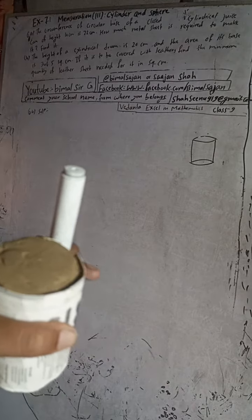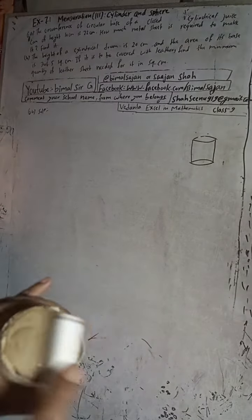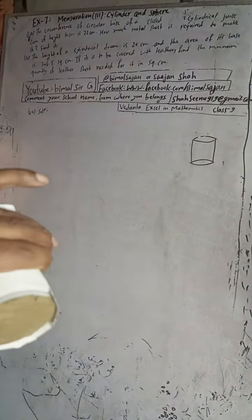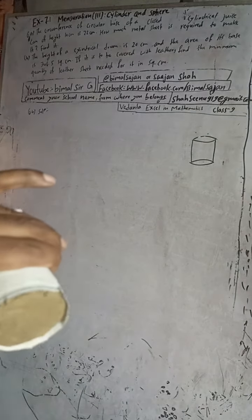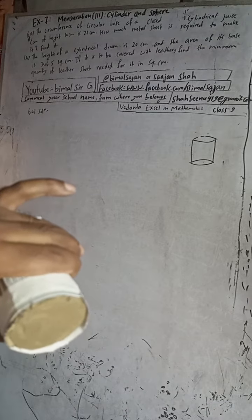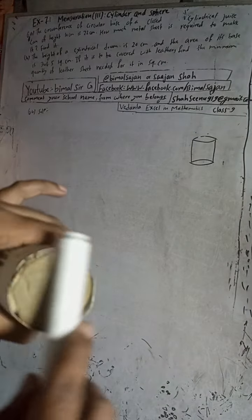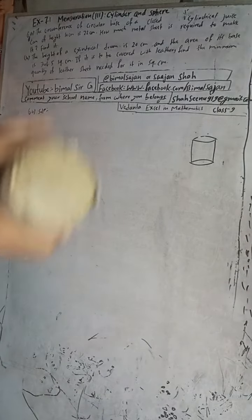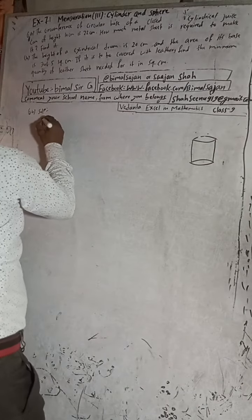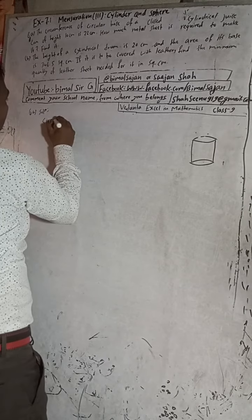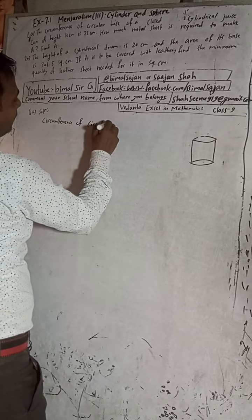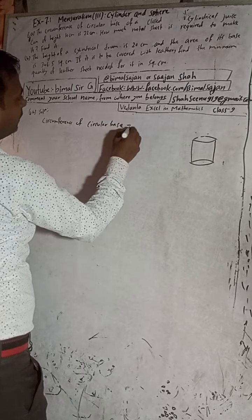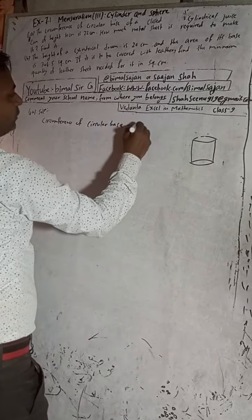The question: given the circumference of the circular base. Circular base means either the top or the bottom base of the cylinder. If you look at the can, this is the circular base. The circumference of the circular base is given. The height is 10 cm, and the circumference of the circular base is 22 cm.